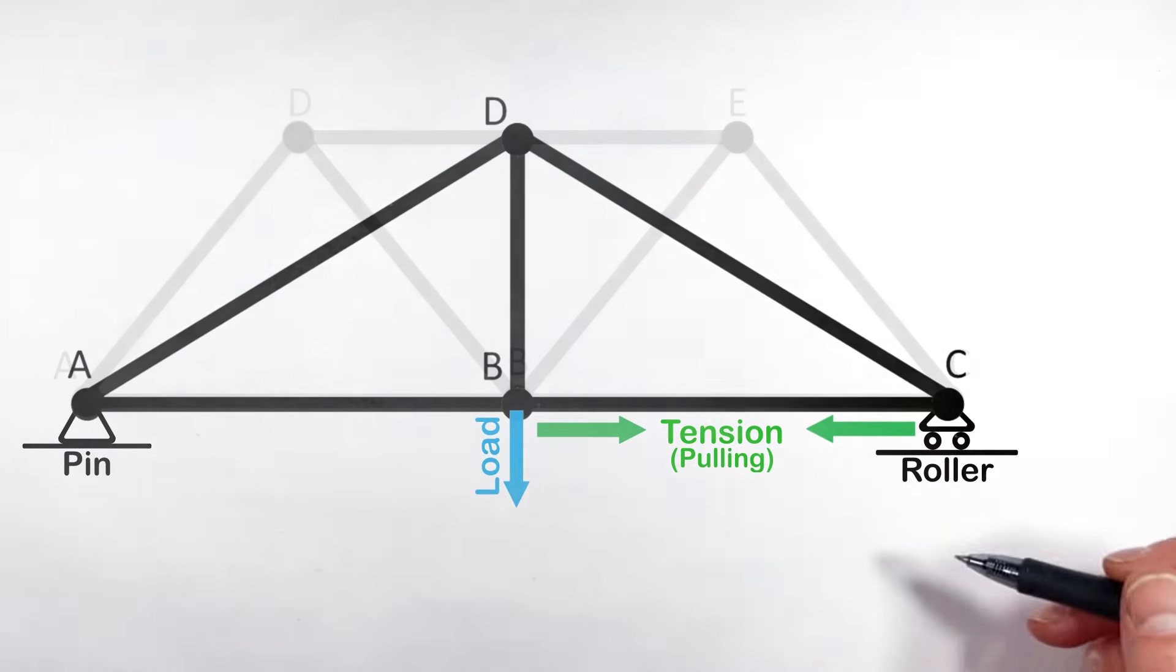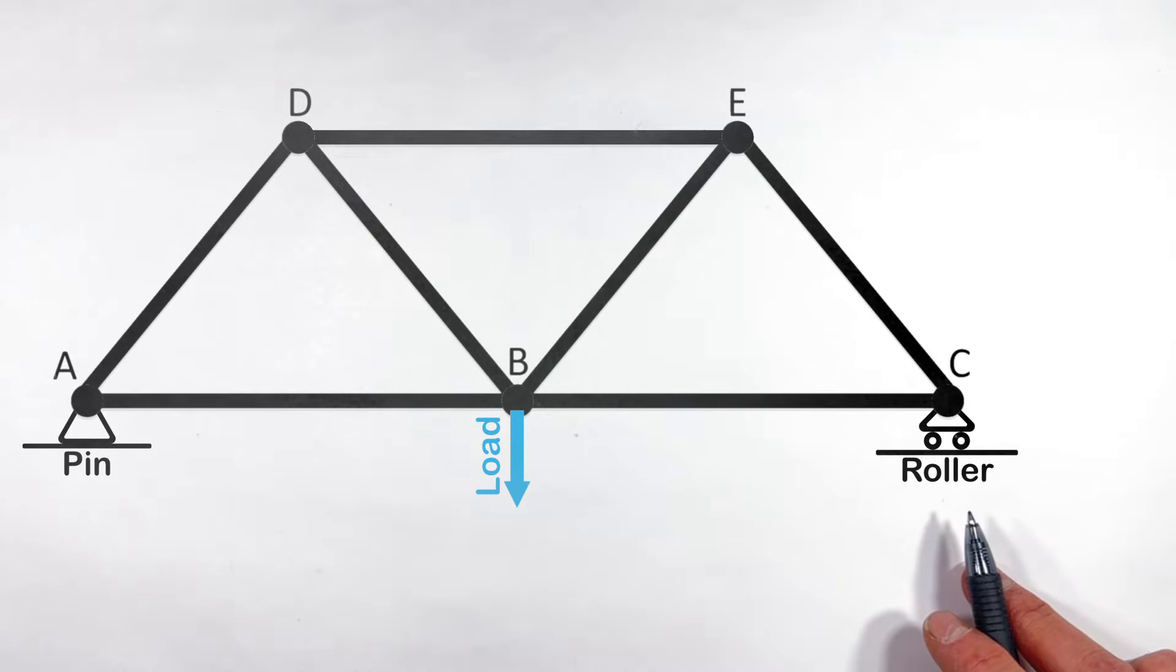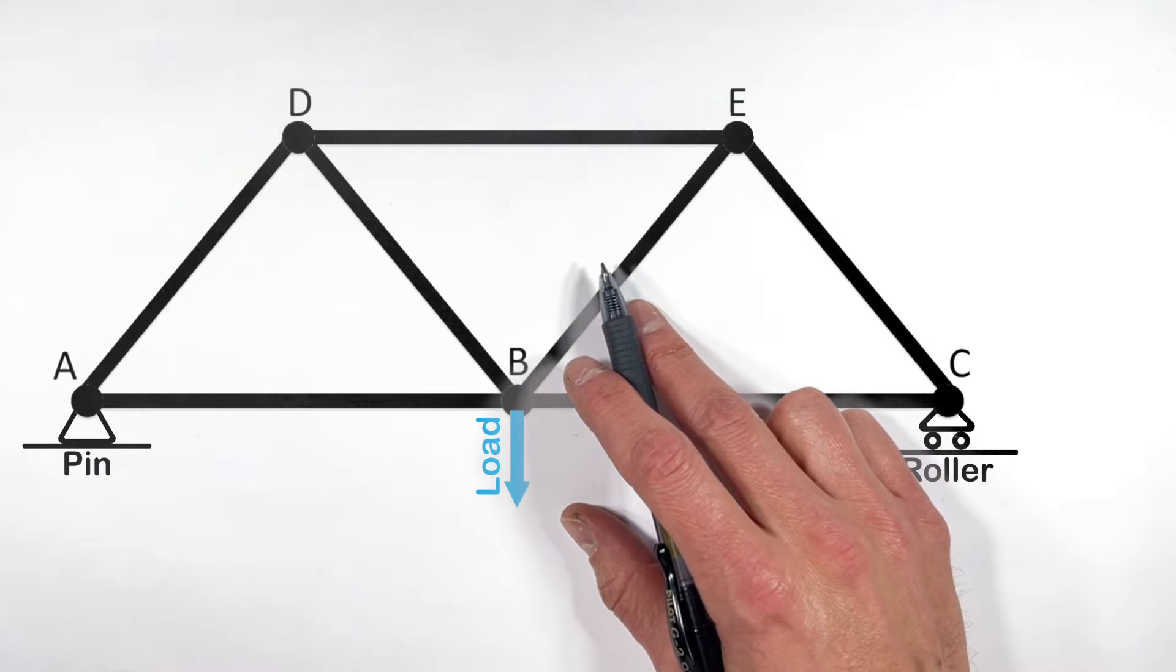Now this method can be applied to more complicated trusses. Looking at this seven beam truss we have, I see a lot of people get confused on whether or not this top member right here is under tension or compression.